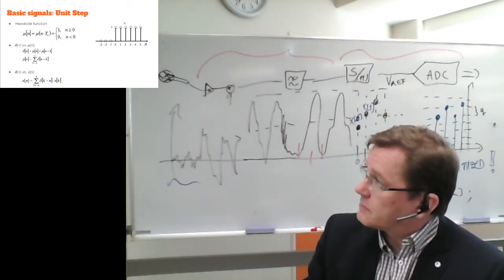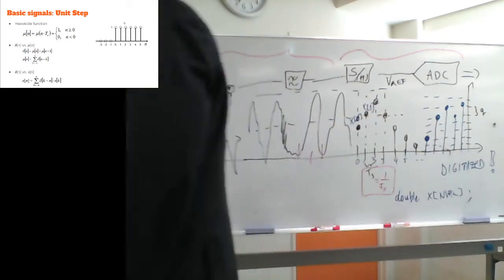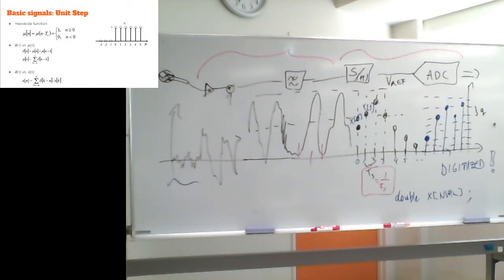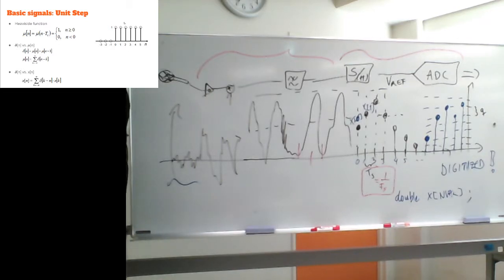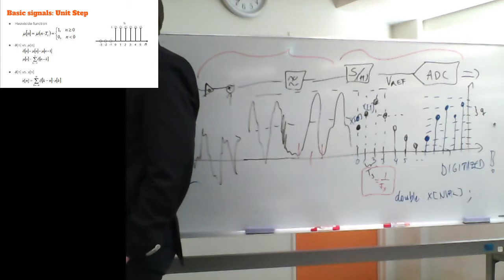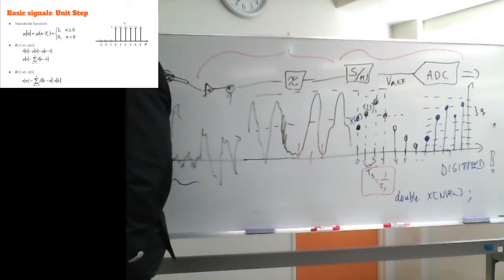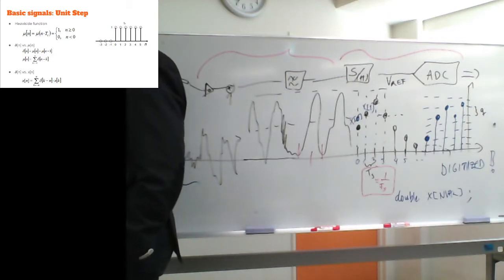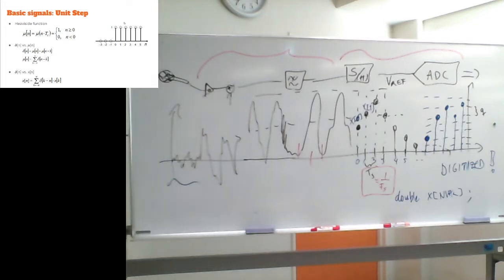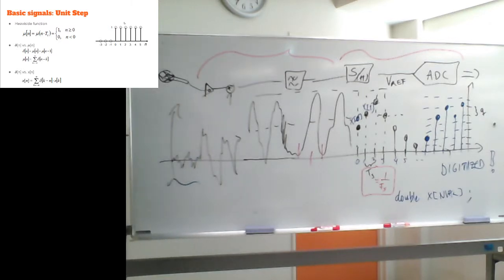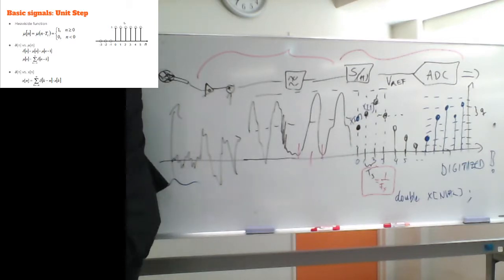The unit step function is a sampled Heaviside function. You've probably experienced this in analog electronics labs: take an RC filter and hit it with a square wave, observe how it smooths the signal shape, and compare with Laplace transform results. The unit step and unit impulse have a relationship: the unit step is the sum of delayed unit impulses, and the delta function is the difference between the step and a delayed step.